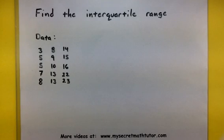Welcome to My Secret Math Tutor. In this example, we're going to find the interquartile range. Now what the interquartile range is, is basically the range of the middle 50% of all of our data.